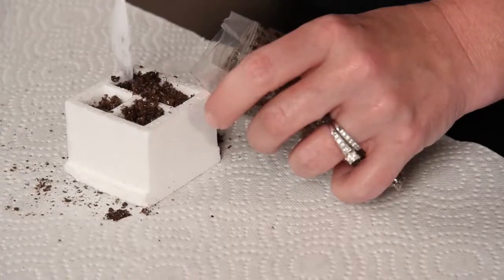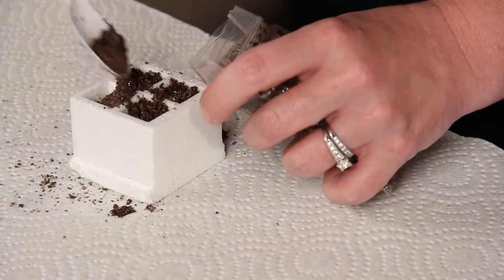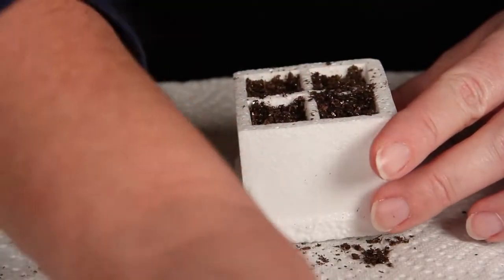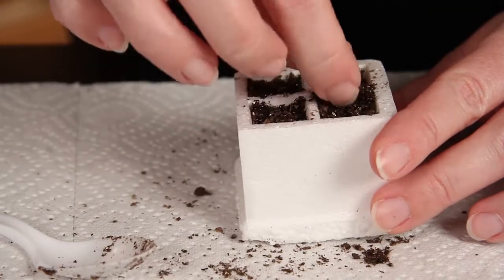Fill the rest of the cell up with soil. Make shallow depressions at the top of each cell. Make sure not to press hard or compact the soil.